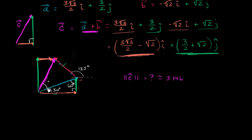Now let's think about the direction. Let's call this angle theta. We know the length of the opposite side and the length of the adjacent side, so we can use tangent. The tangent of theta is equal to the length of the opposite side over the adjacent side.